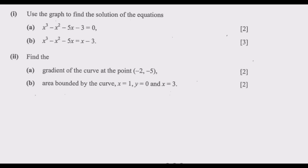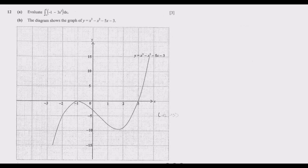This question is one I encourage people to answer because it always comes up and is one of the easiest questions you can encounter in an exam. Let us start with question A — we just need to evaluate. This can also be written as negative 1 times x to the power 0, because anything to the power 0 is 1.